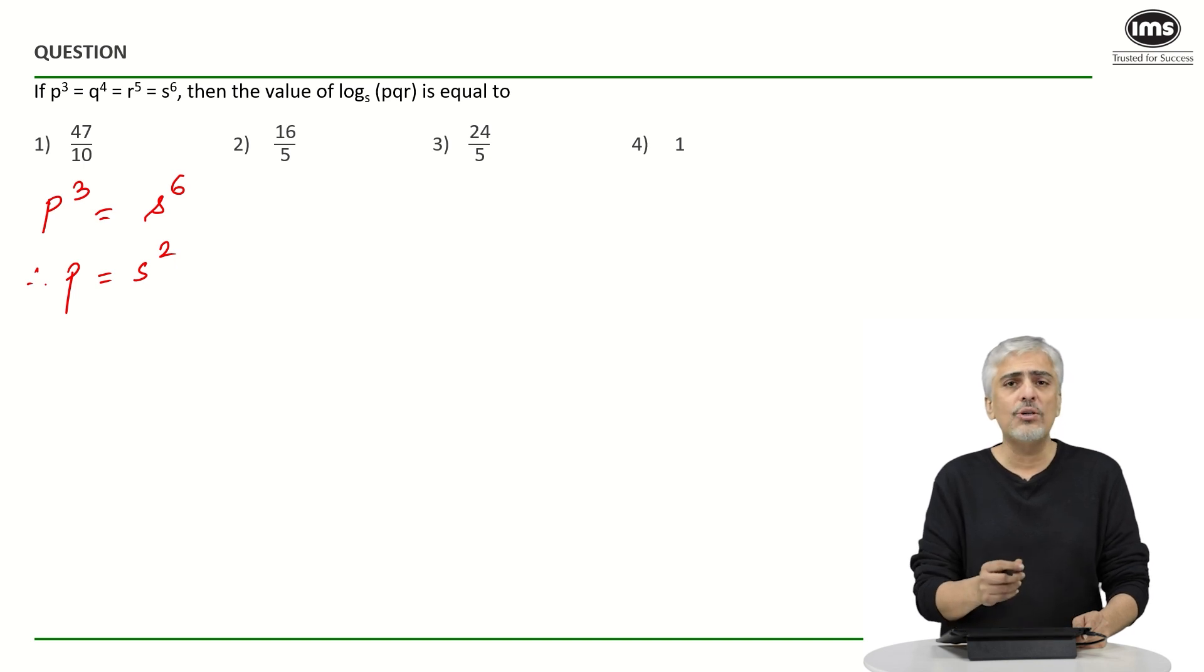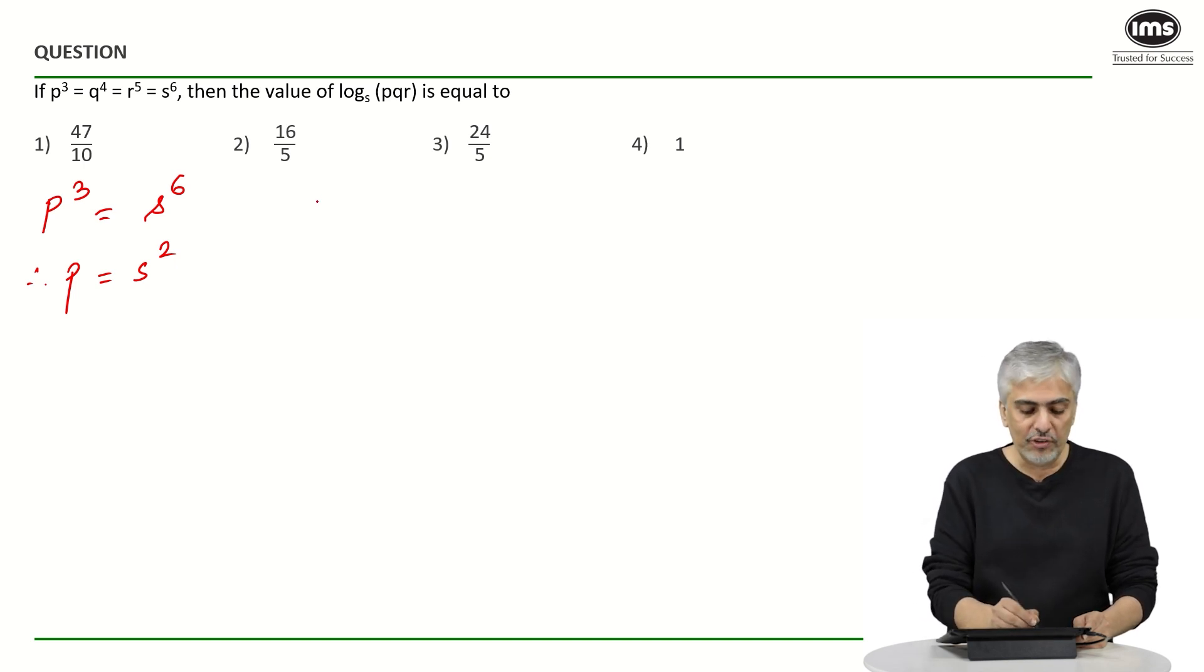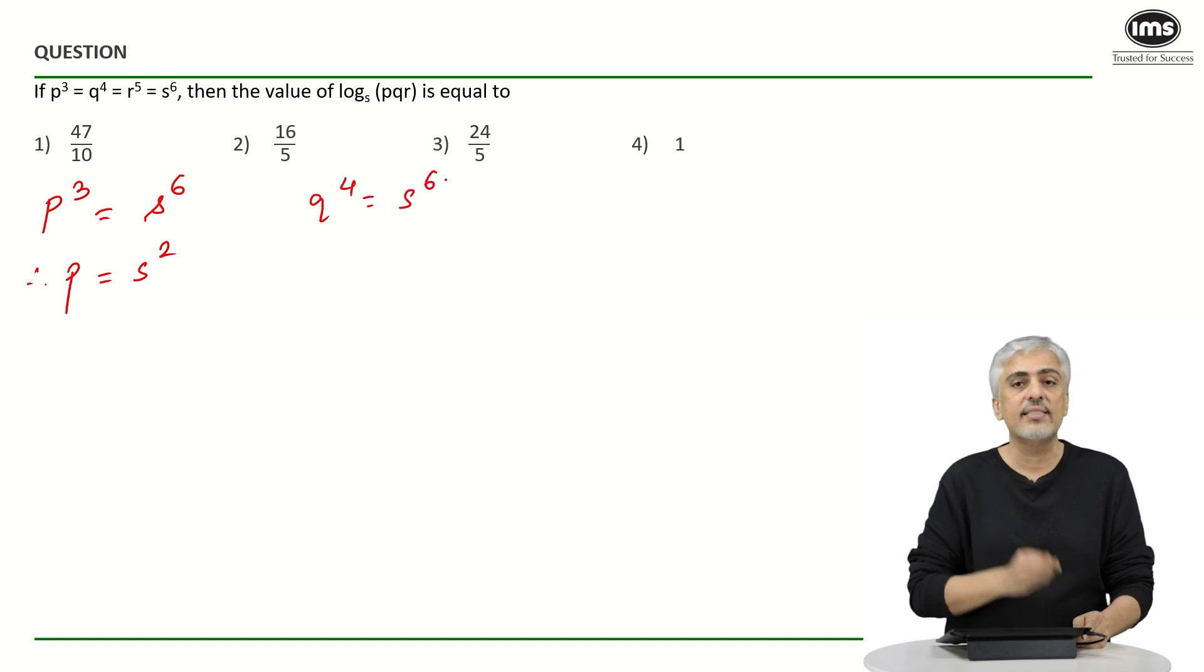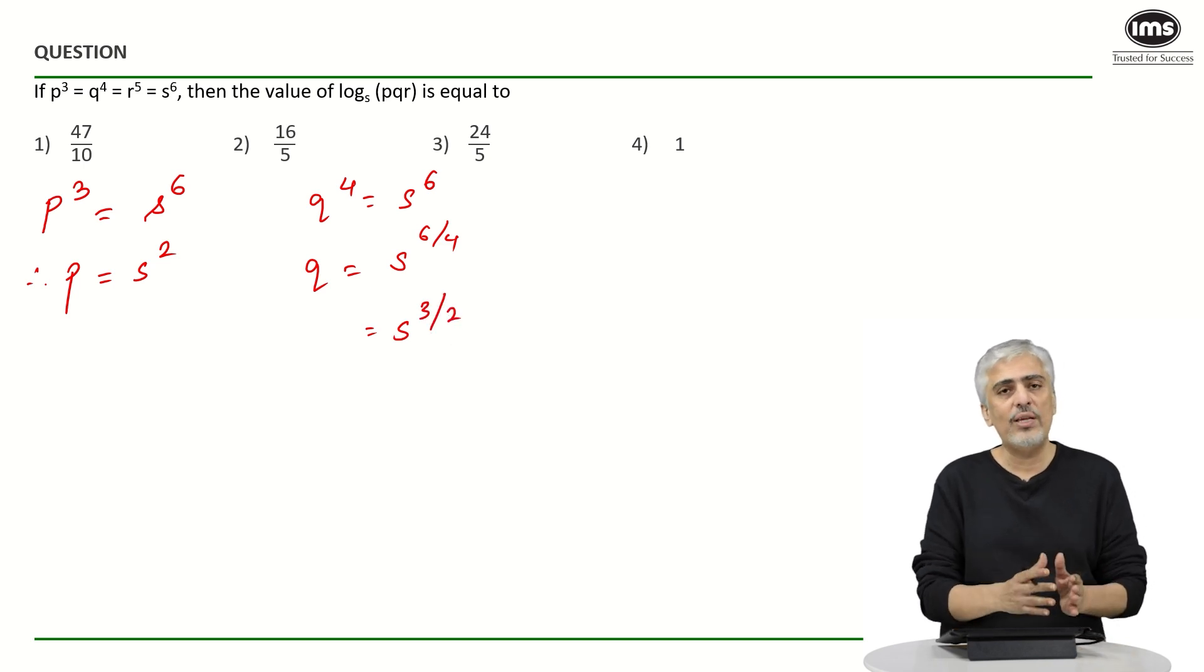The next one might not be so obvious, operate carefully. So, q raised to 4 is equal to s raised to 6. What will we get? We will get q equals s raised to 6 by 4, which is s raised to 3 by 2. The reason I did not take square root and then square root of that, just to explain the indices part to you.